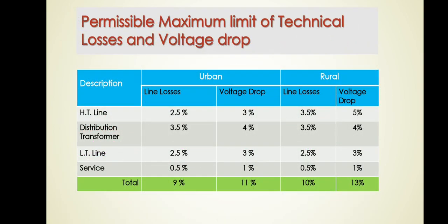We also have different permissible maximum loss limits. The maximum permissible line losses are 9% for urban areas and 13% for rural areas. The overall voltage drop must be below 11%, and for rural it must be below 13%. These are the guidelines that have been given and we must follow them. We are going to discuss the techniques and ways to achieve this. Please stay tuned — I will explain all these concepts in detail from my next video. Subscribe to the channel and press the bell icon so you get immediate information whenever I upload a video on energy conservation and AT&C losses. Thank you very much.